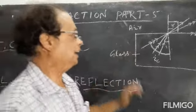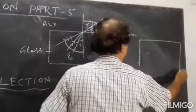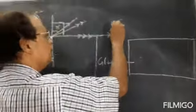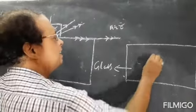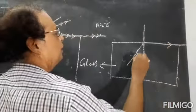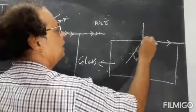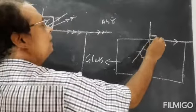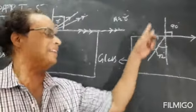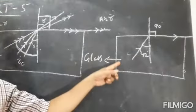For glass and air — let me draw the diagram here — the critical angle is 42 degrees. So if the angle of incidence is 42 degrees, the angle of refraction will be 90 degrees. Critical angle for glass and air is 42 degrees.